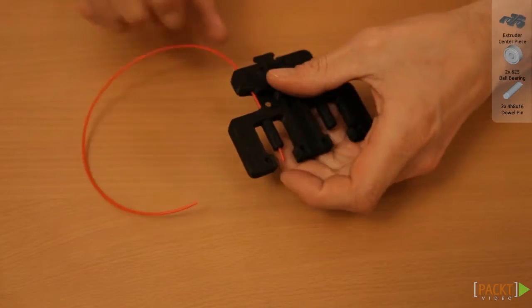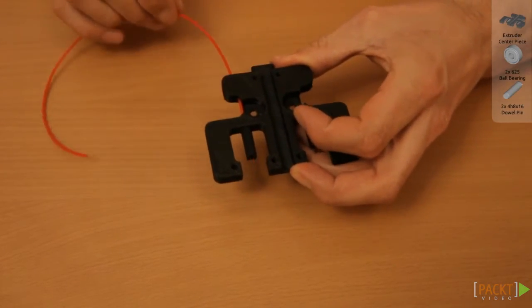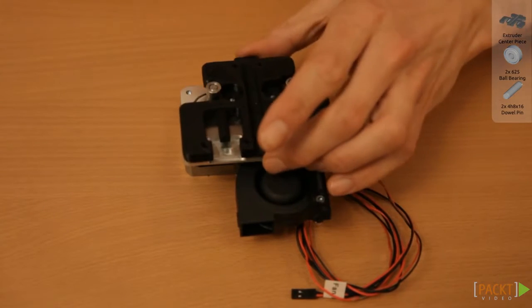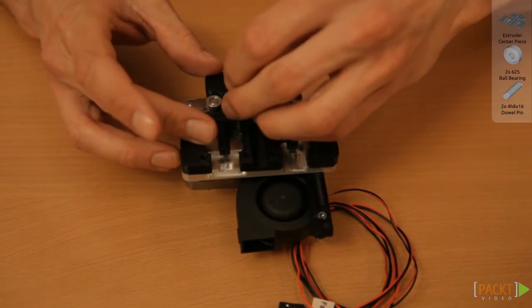Check if the filament can freely move through the printed extruder center part and put it on to the aluminum plate. Next, place the bearings and fix them with the dowel pins.